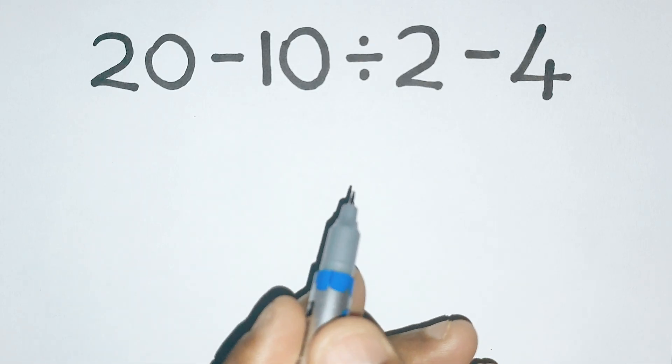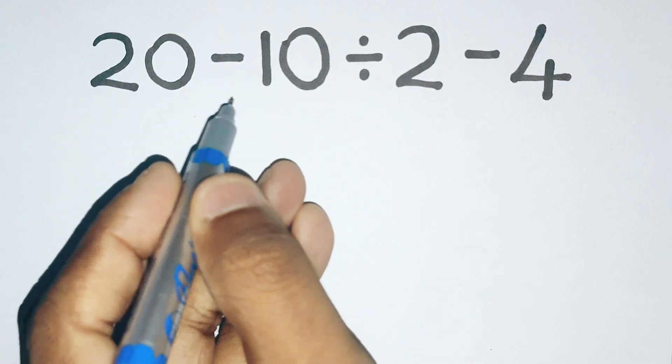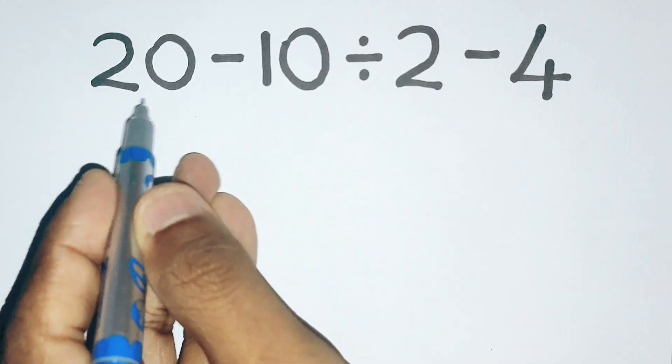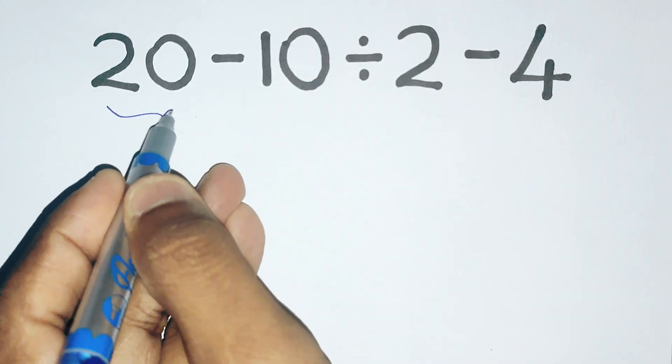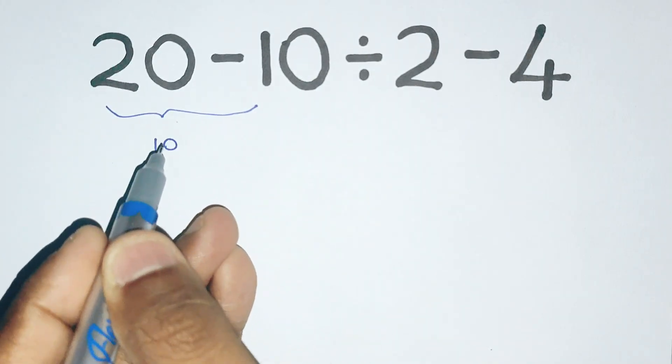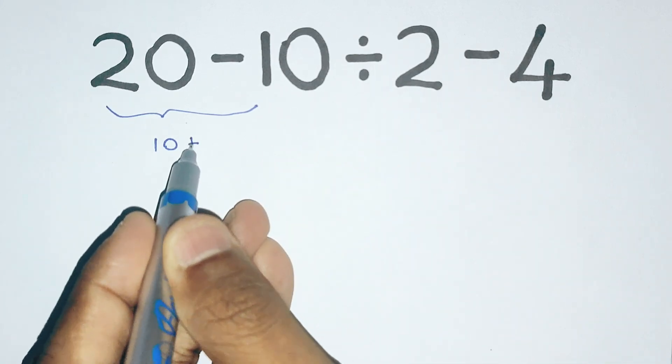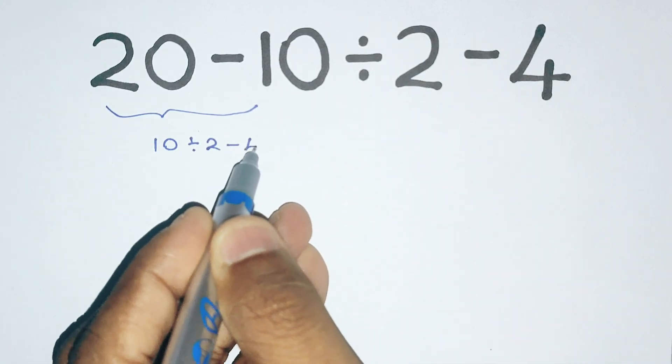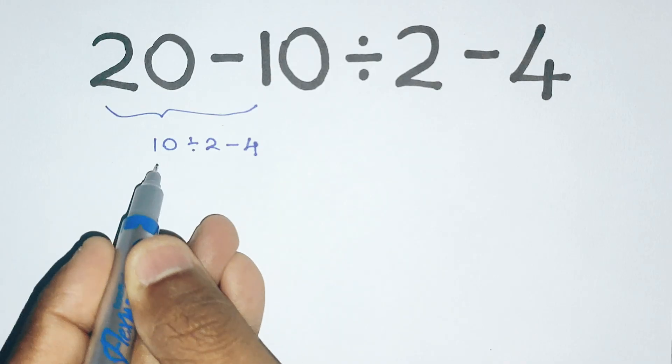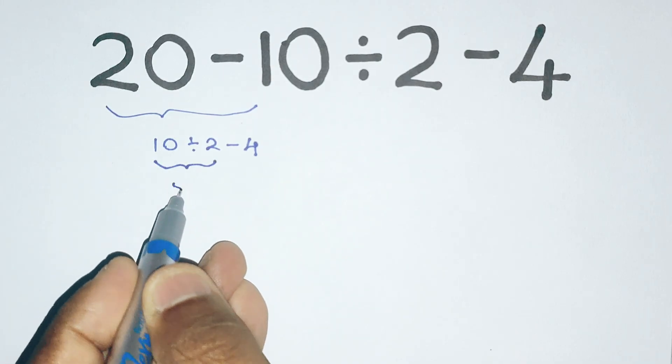Let's break it down. What most people do is subtract 10 from 20 first, that gives 10. Now the expression becomes 10 divided by 2 minus 4. Then they divide 10 by 2 which is 5.